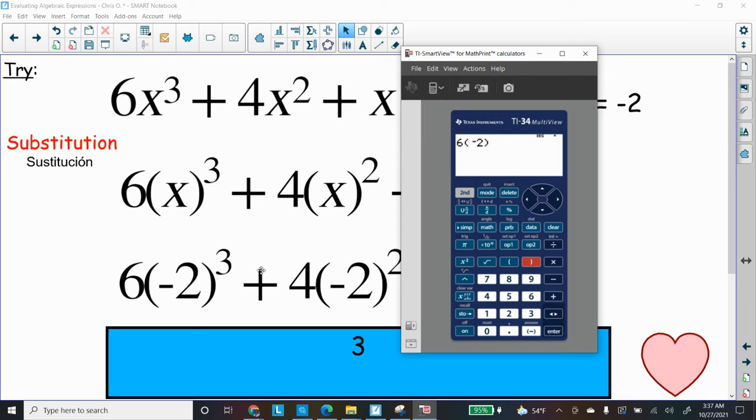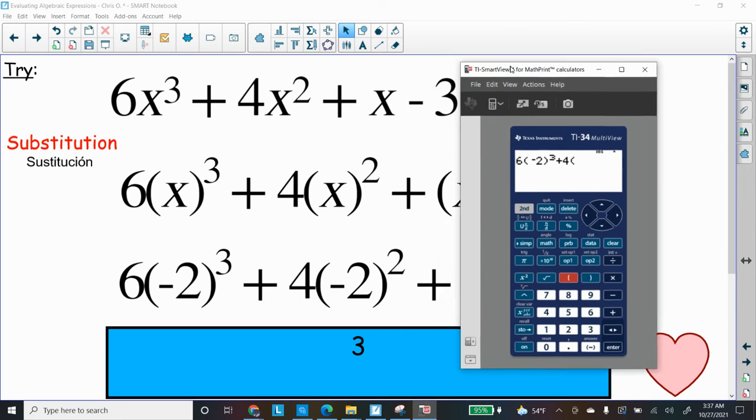Parenthesis. Now I got to use the caret button to make this 3 get up there. My calculator is a little bit different, so it puts up 3 very nicely. You would have the caret symbol and then 3, which tells the calculator to make that number next to it go up there as an exponent. All right, plus 4(-2).